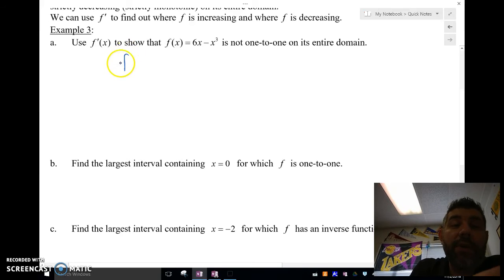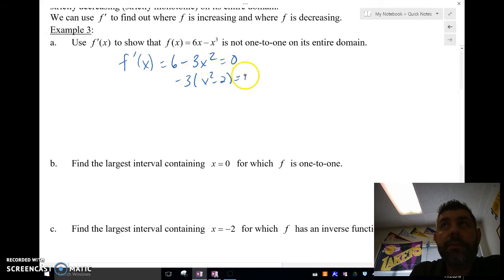Let's take the derivative. So we'll take the derivative and set it equal to 0. I'll factor out a 3, and I'll get x equals plus or minus root 2, and those are my critical numbers.